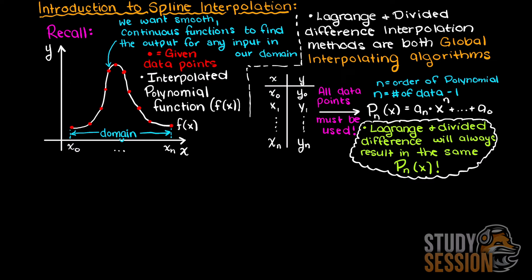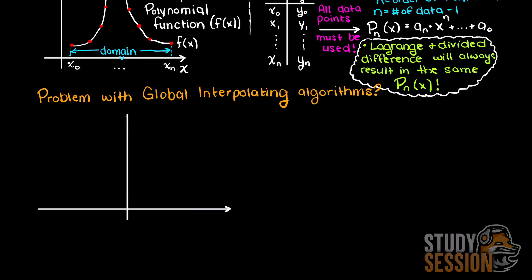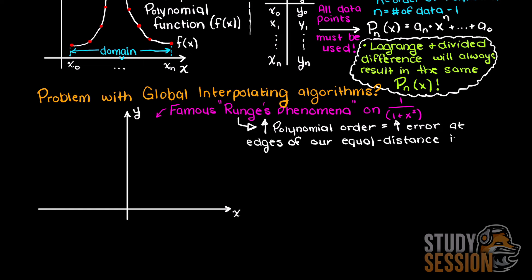Although great in some scenarios, sometimes using a global interpolating method is impractical or less efficient than simply taking a local interpolation. Why though? Well, as we add more data points to a global interpolating polynomial, we need to increase the polynomial order, which in certain applications can give wildly inaccurate answers, like this graph here for example.